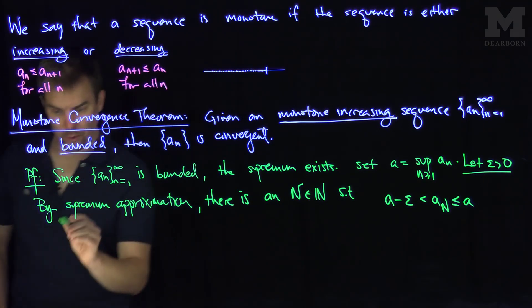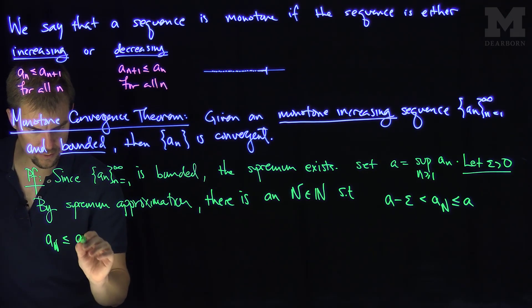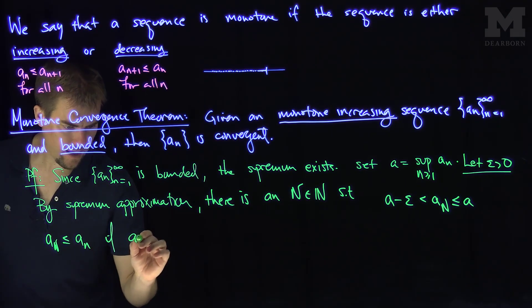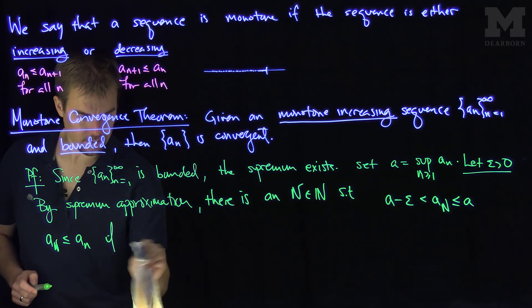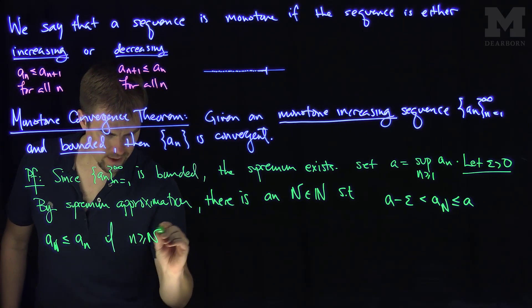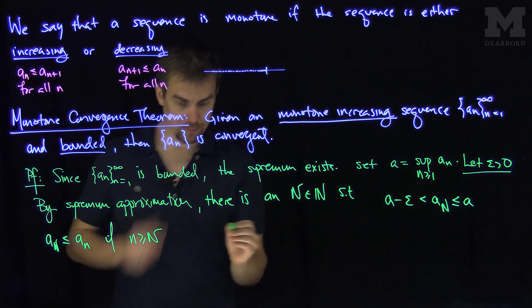Since a_n is monotone, we know that a_N is less than or equal to a_n if n is bigger than or equal to N. What does this imply?